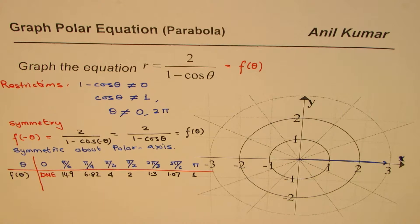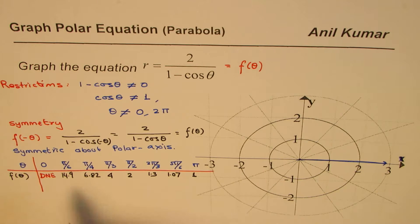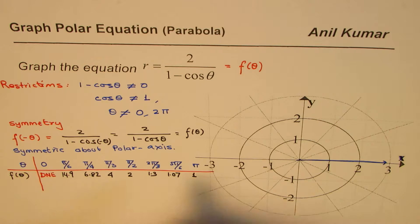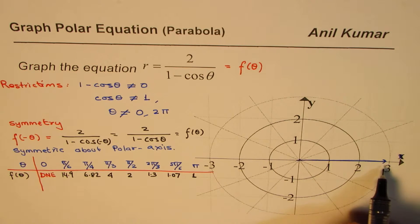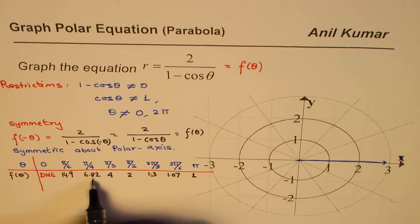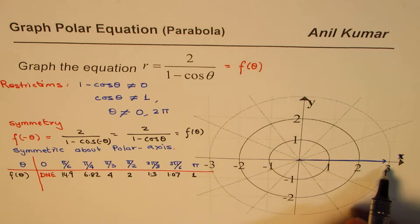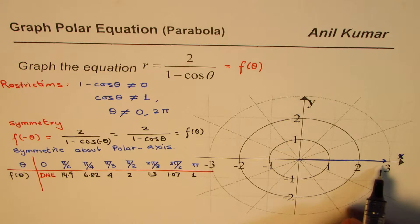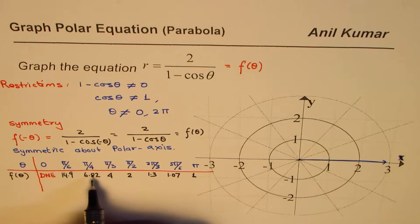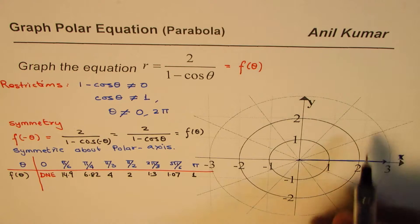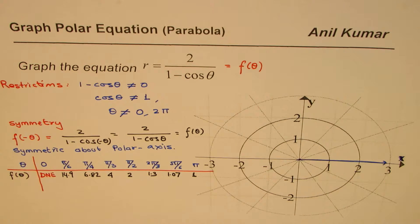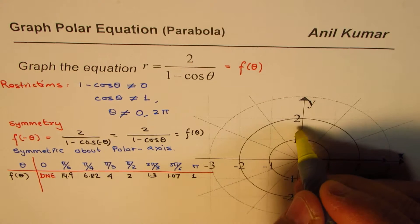Let's plot these points and join them. At π/6 the value is about 14.9, so that's very large on our current scale — we'll skip that for now. π/4 is 6.8, also large, so let me change the scale to accommodate these values better.